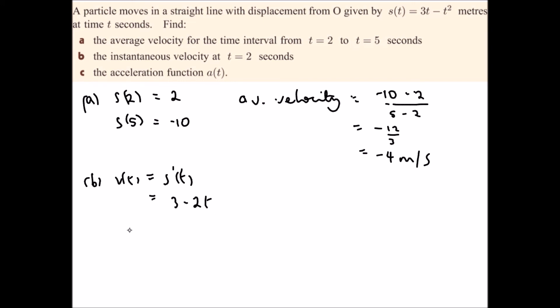And therefore if we want the velocity when t equals 2, then all we do is replace 2 in our function here to give us 3 take away 4, so it's negative 1 meter per second.